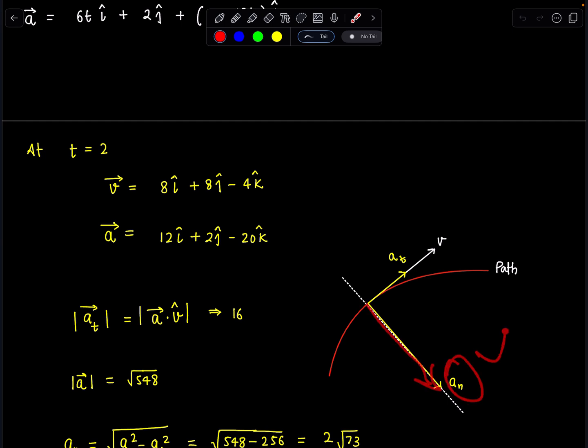Now we know velocity vector so tangential acceleration can be written as a component of acceleration along vector v. So projection vector concept we can use and magnitude wise I can write as vector a·v̂ and this magnitude turns out to be 16. You can check with the calculation. I am not showing it here.